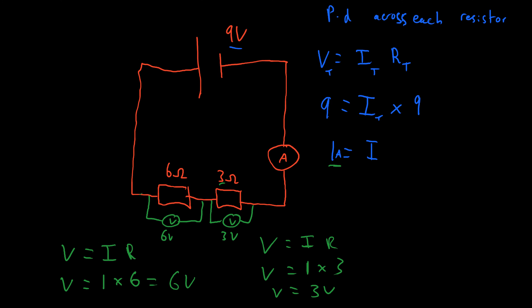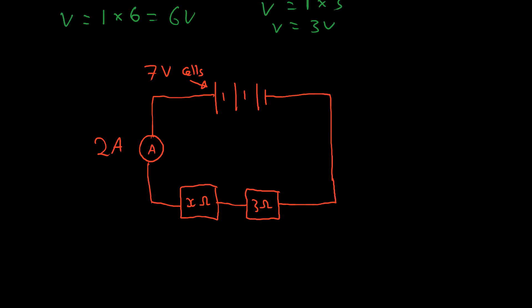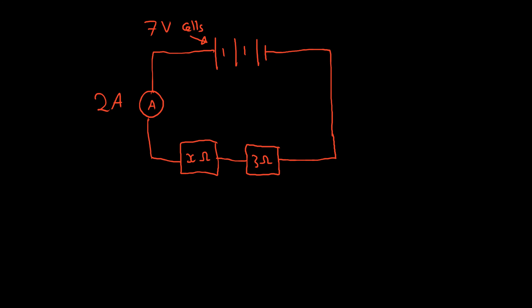Let's have a look at one more problem — you can pause the video and have a go yourself. This one's slightly more complex. What you have here is a battery made up of three cells, and each one of those cells is 7 volts. We want to work out the potential difference across this resistor and also work out x, which is its resistance. This time we're not given the resistance, but we are given the current in the circuit.